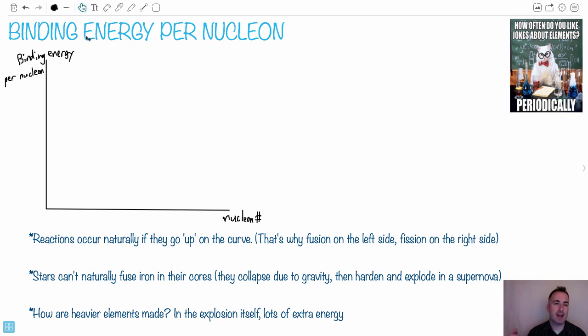So one way to sort of scale it is look at what's the binding energy for every nucleon. Remember, nucleons are the top number, the neutrons plus protons. So if we consider the binding energy per nucleon, that would be a graph of this on the y-axis. And on the x-axis, we'd say the nucleon number.